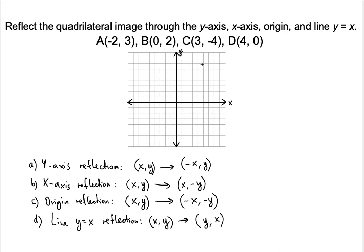Suppose I draw this line segment in the first quadrant. To reflect this line segment through the y-axis means that it will be a mirror image created through the y-axis. The distance of 5 that you see here should be the same distance to the left of the y-axis. So the reflection will be this one here — the same length, simply reflected through the y-axis. This is the same distance from the y-axis on the left side of it.